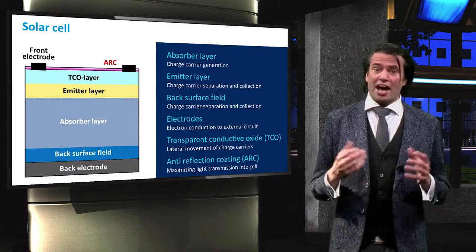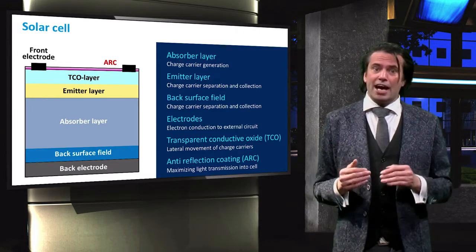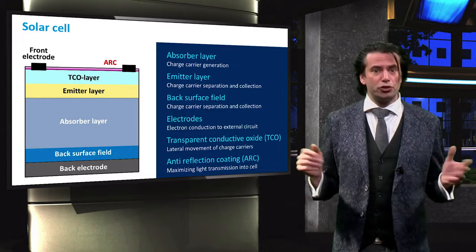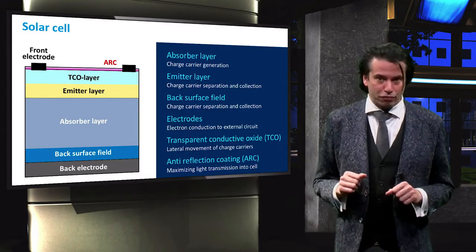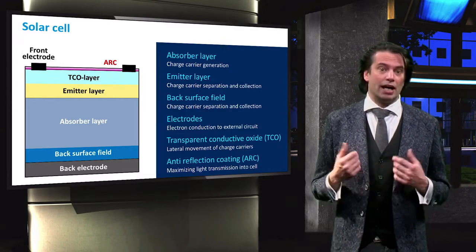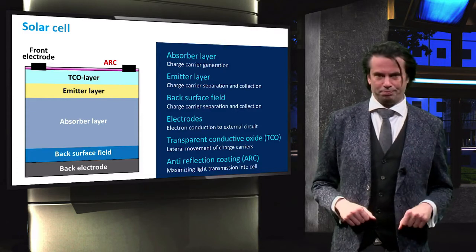Finally, an anti-reflection coating is placed at the front of the solar cell to reduce front surface reflection and maximize the light transmission into the cell.